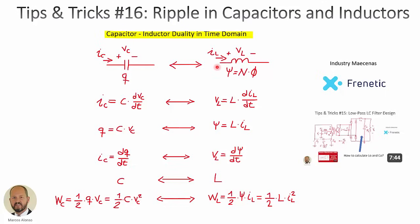In the case of inductors, we have the voltage across the inductor, the current through the inductor, and another important magnitude: the flux linkage, which is equal to the number of turns times the flux through one of the turns of the inductor.